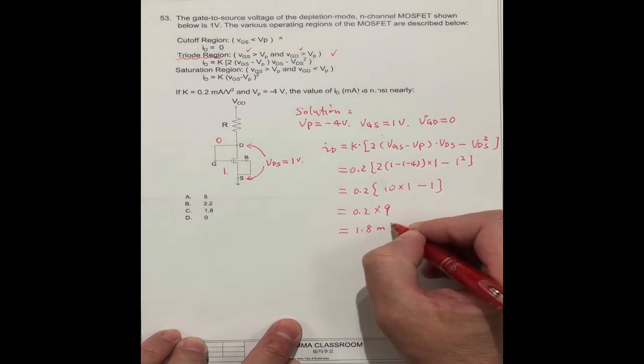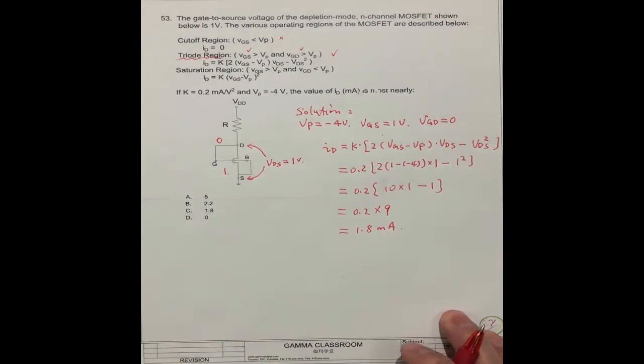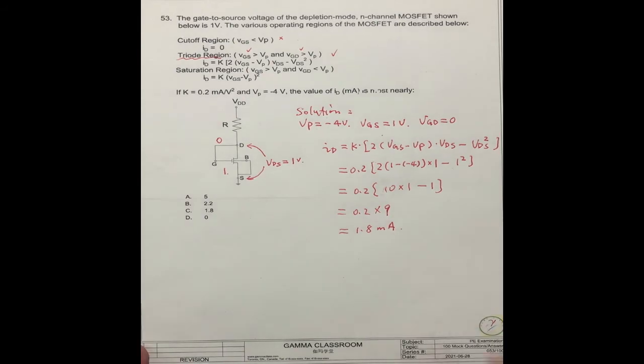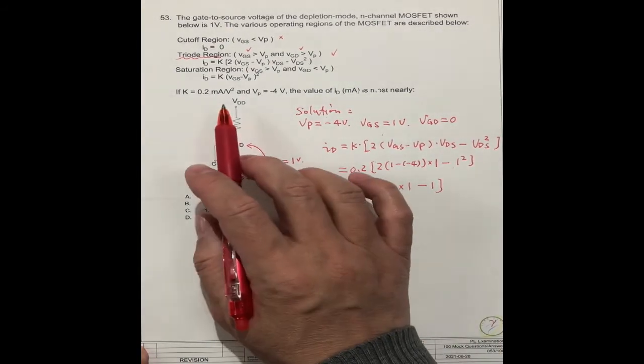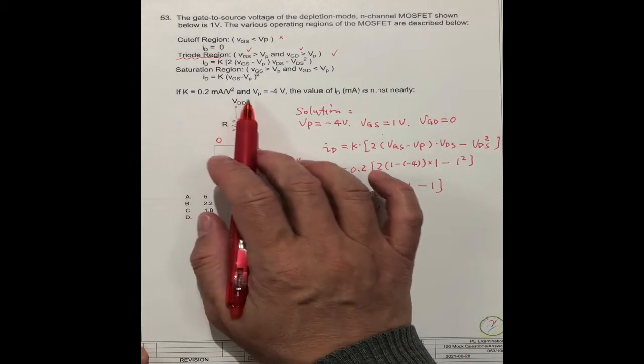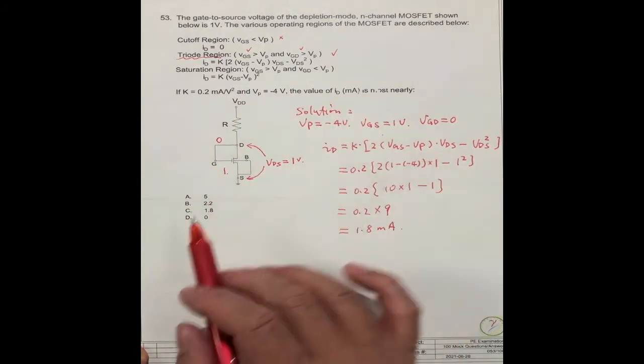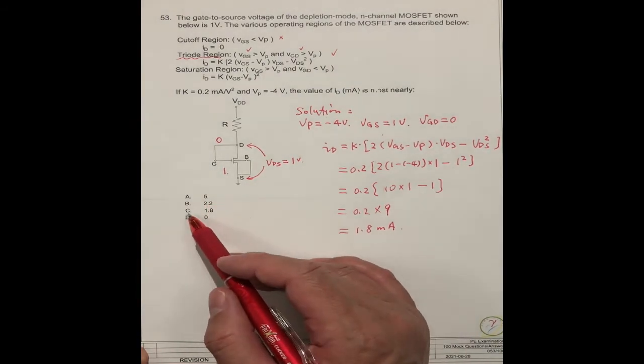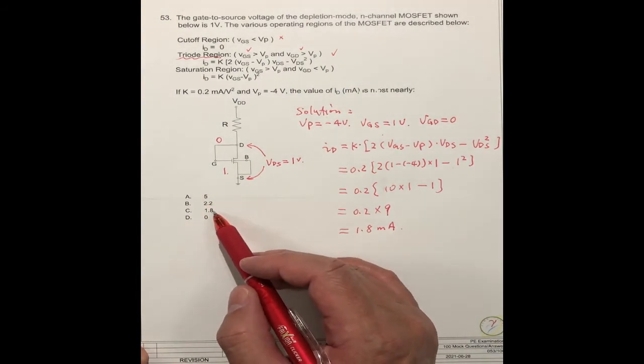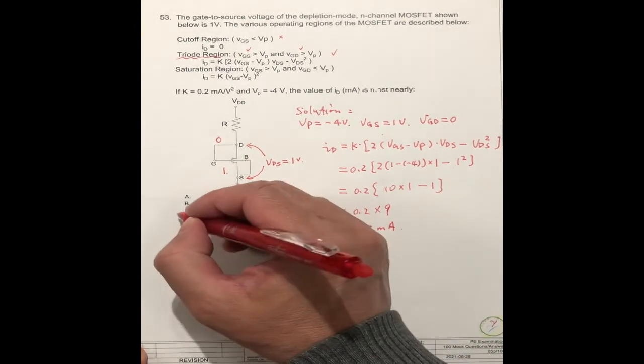Because the K is milliamps, the unit is milliamps. So the correct answer, you see, the unit is milliamps. So here, C is 1.8 milliamps. So the correct answer should be C.